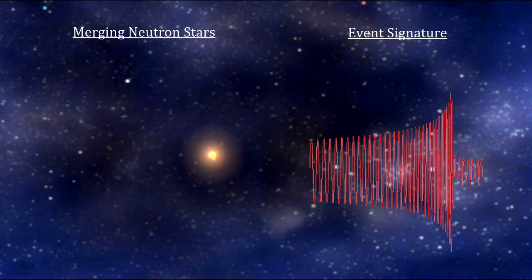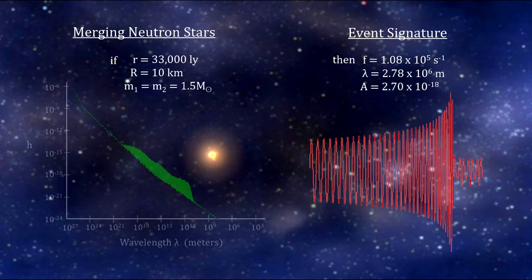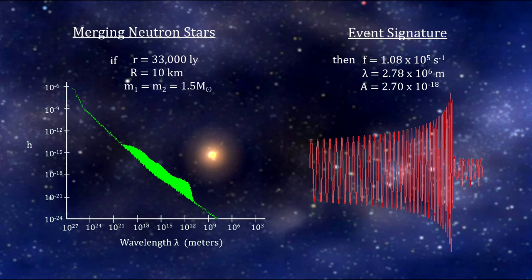The mass of a typical neutron star is 1.5 times the mass of the Sun, with a radius of only 10 kilometers. If the system is 33,000 light years away, an average distance for a Milky Way object, it would give us a theoretically detectable wavelength and amplitude.